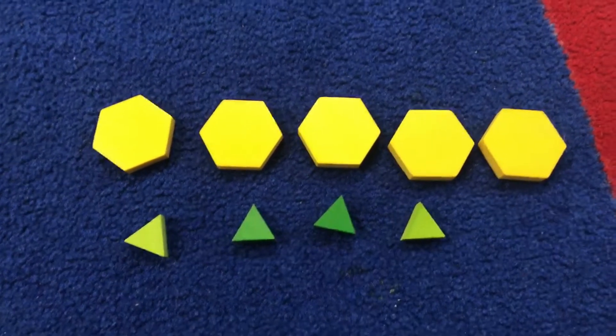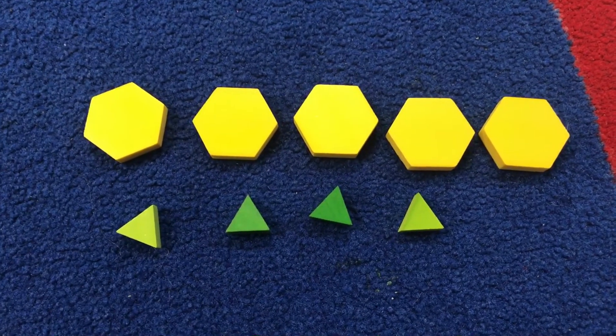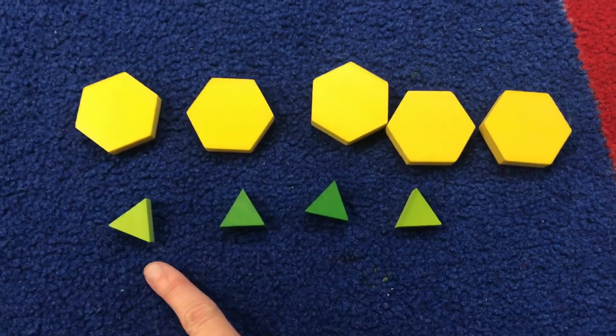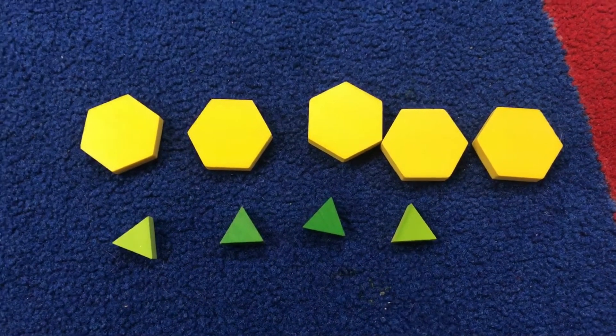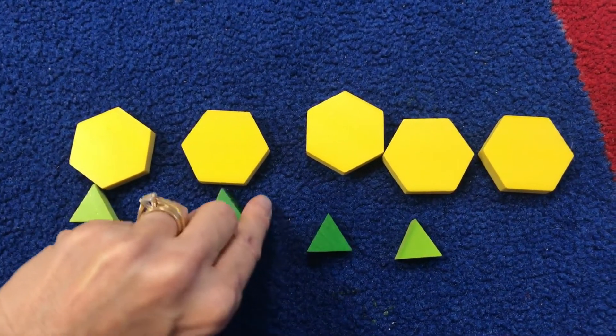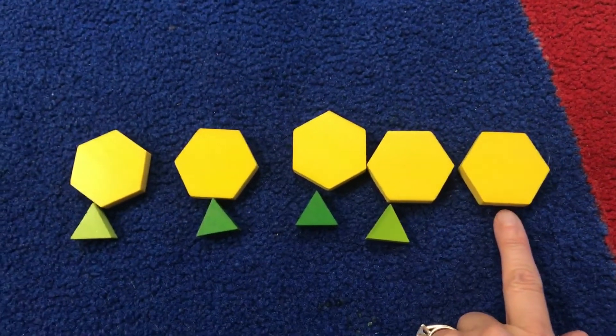Hi, I'm going to be telling you about more than and less than. You can see that I have more hexagons than triangles. And I know this because when I match them up one to one, there's an extra hexagon.